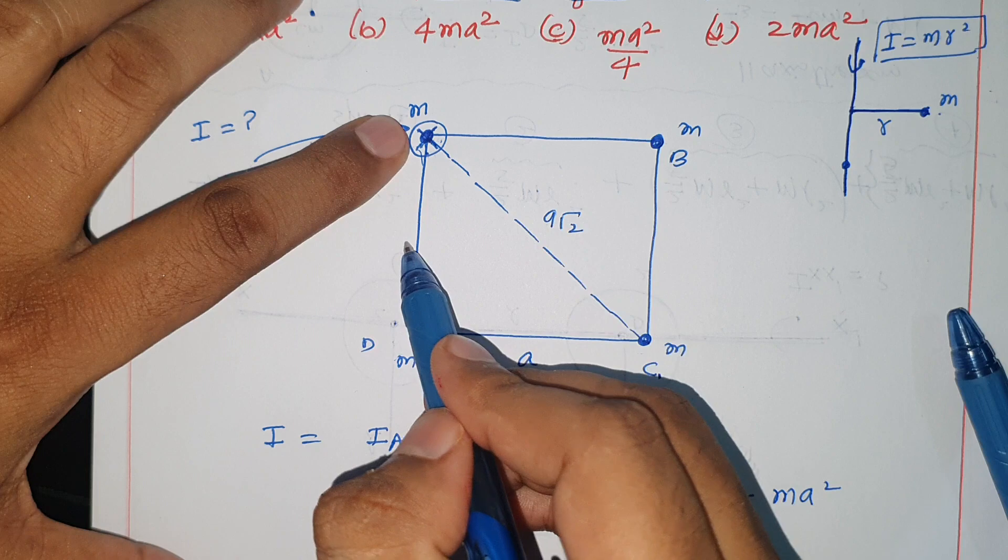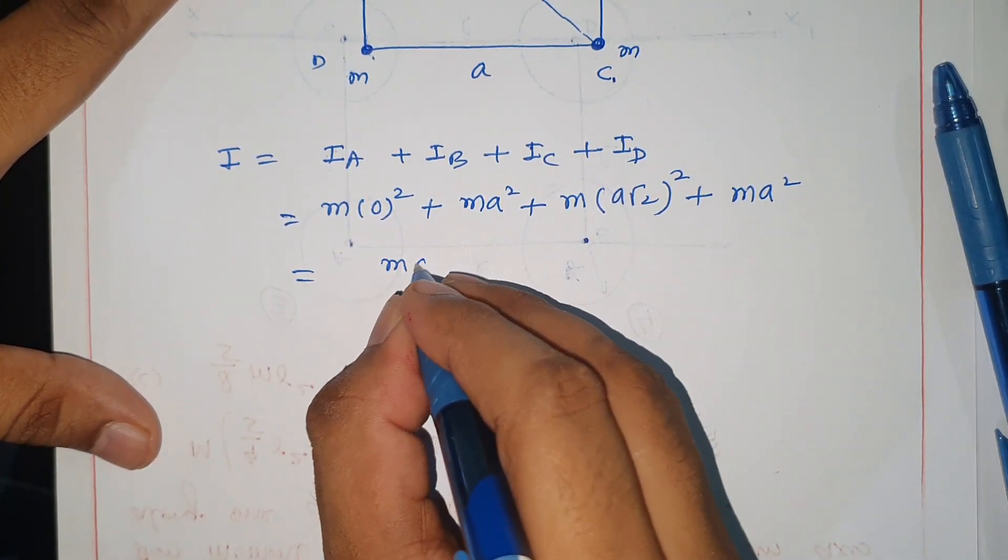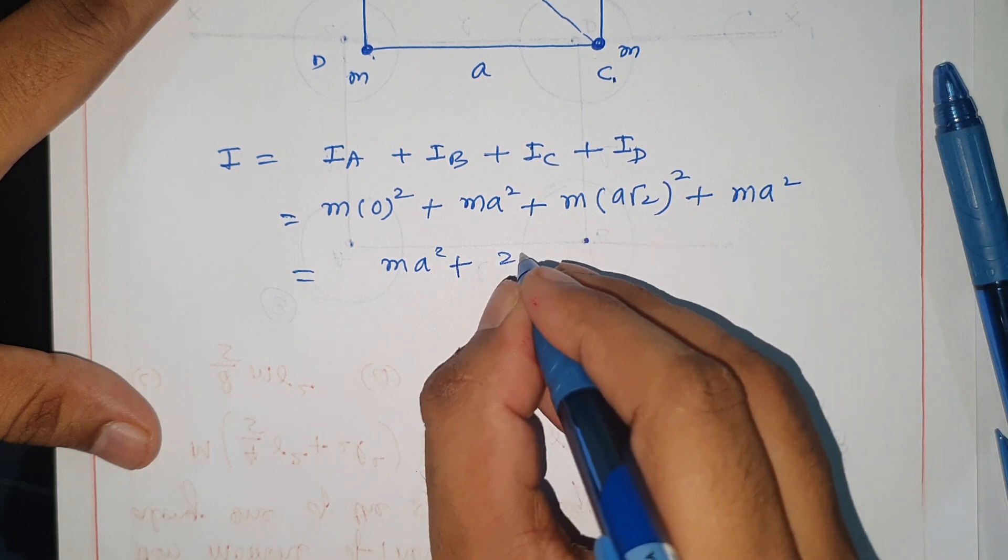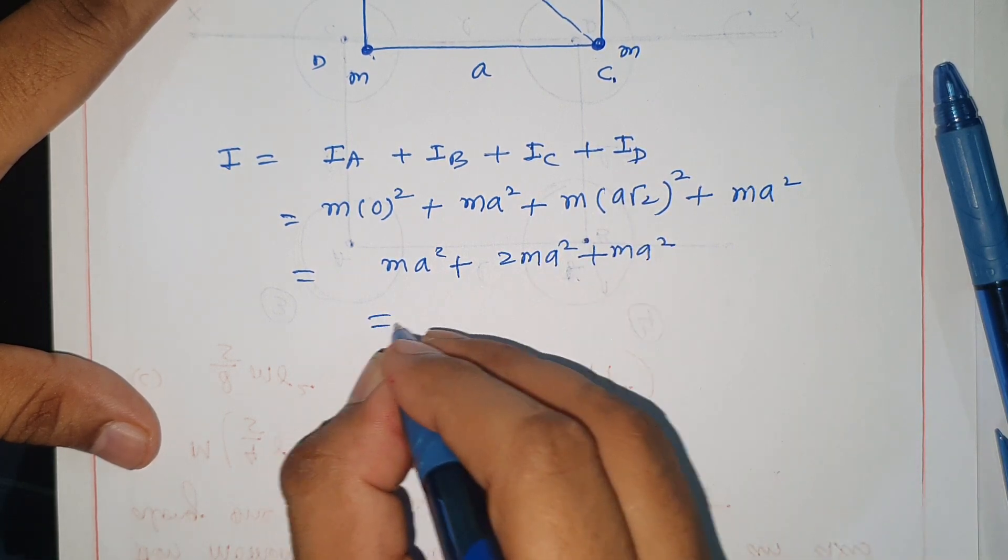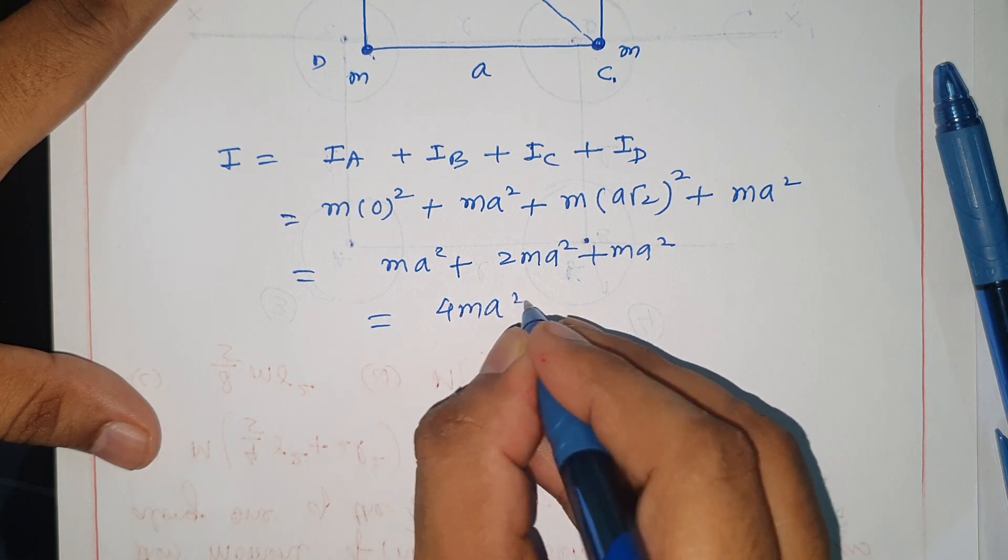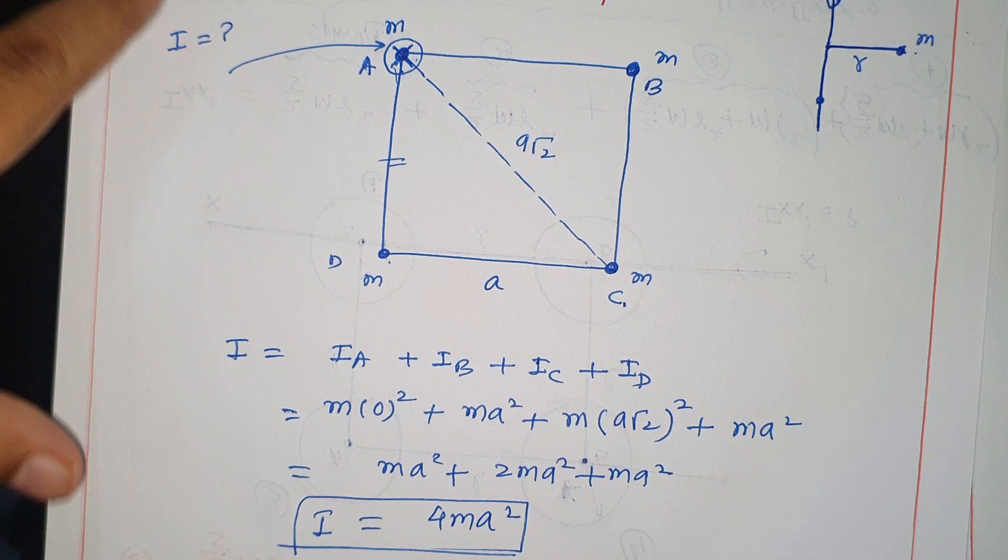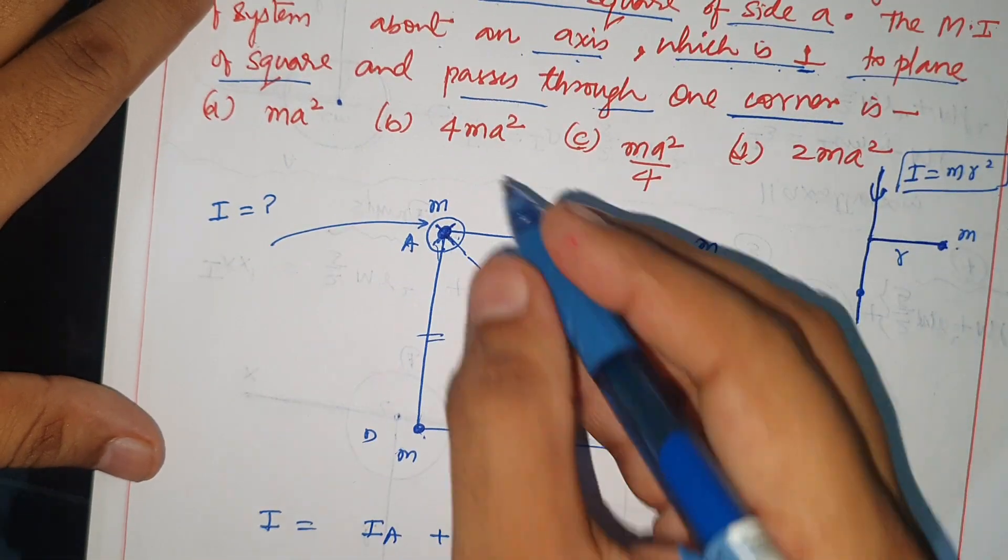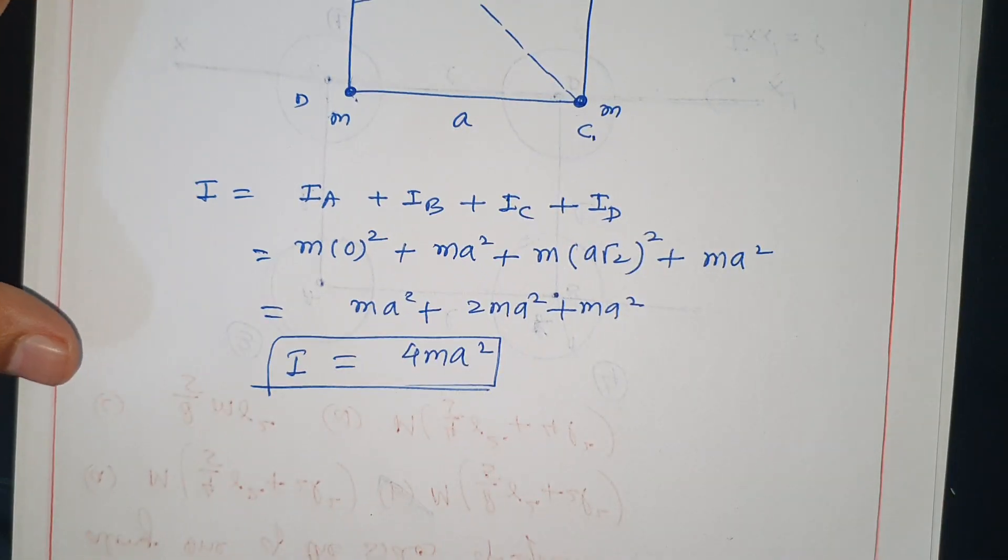The perpendicular distance to D is a. So: zero plus m times 2a squared plus m times a squared plus m times a squared equals 4ma squared. I hope you understand this very easy question. This answer is correct. Thank you.